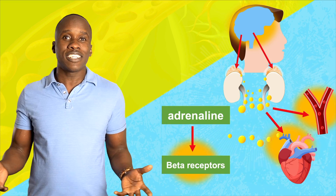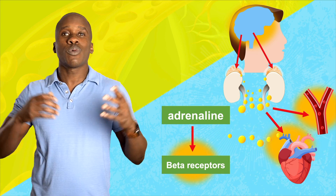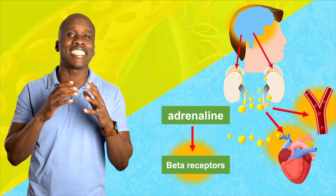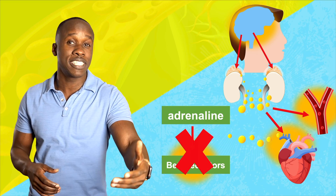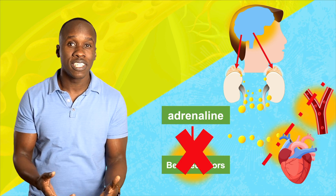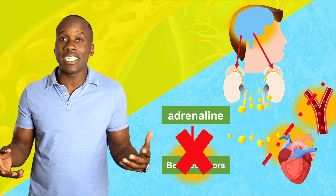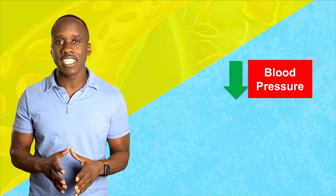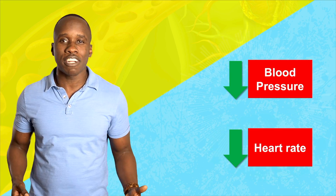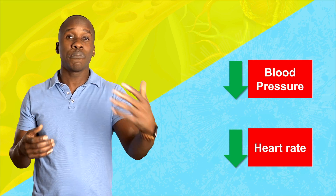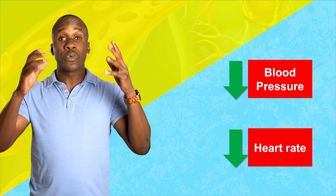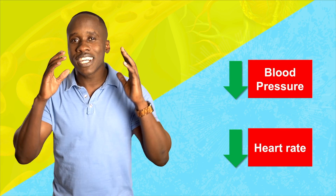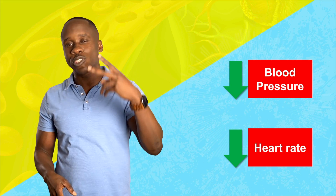A beta blocker does exactly what it sounds like — it's what we call a competitive antagonist. It basically blocks the receptor sites on the beta receptors so that epinephrine can't bind to it, and it won't be able to do what it does. That can help to reduce blood pressure and heart rate — it basically leads to the opposite of the fight-or-flight response. If a person has high blood pressure or some other heart-related issues, this may be beneficial.